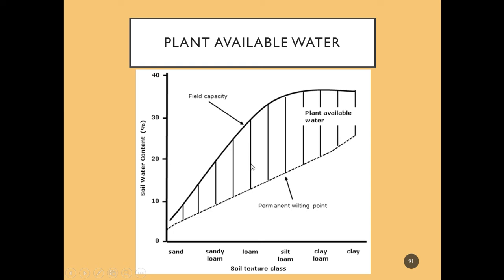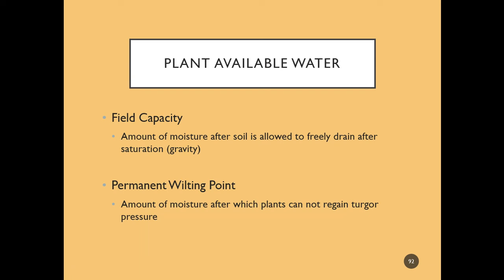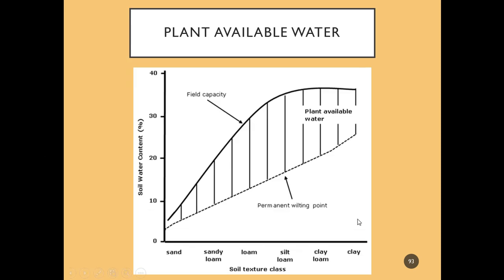As we move down these lines, our plant isn't dead, but our photosynthesis has probably slowed. It's starting to take actions to conserve water so that it doesn't die. So we want to maintain in the upper quarter or upper third of this range. Again, field capacity is the amount of moisture after soil is allowed to freely drain after saturation — so this is just draining by gravity. Permanent wilting point is the amount of moisture after which plants can no longer regain turgor pressure. Plant available water is the amount of soil water content between those two points.